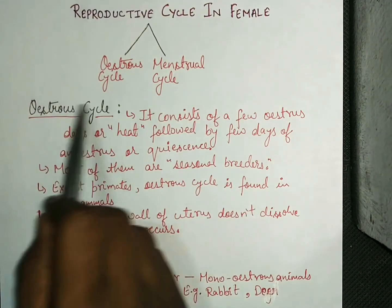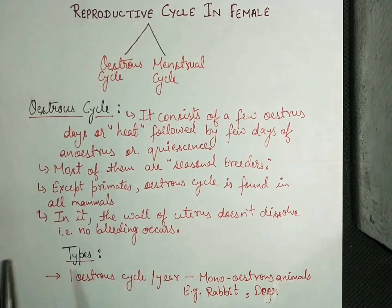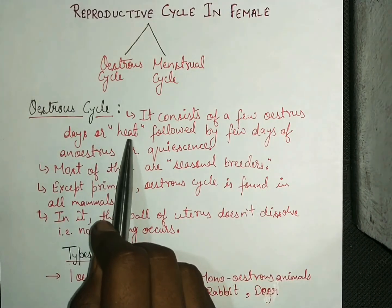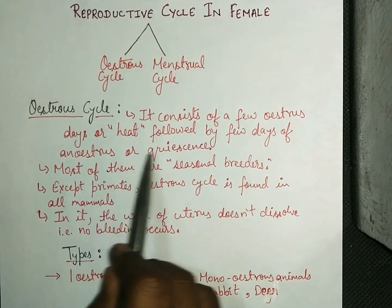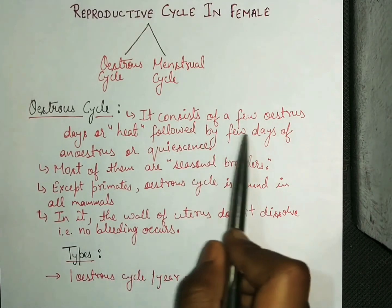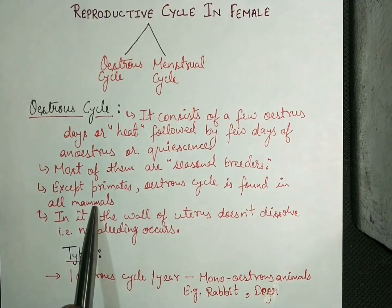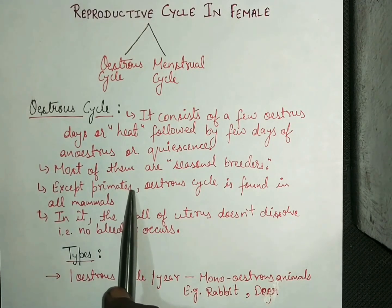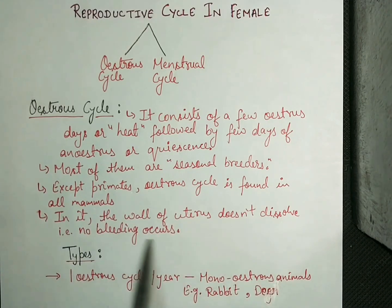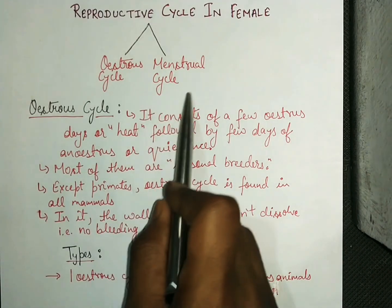The estrus cycle is mostly found in seasonal breeders and it consists of few estrus days or heat, followed by few days of anestrus or quiescence. It means there will be some breeding season and after that a non-breeding season. It can be found in all mammals except primates, and the wall of the uterus does not dissolve — no bleeding occurs in the estrus cycle, but in the menstrual cycle bleeding occurs.